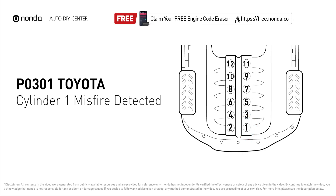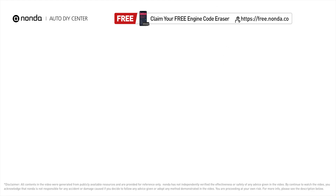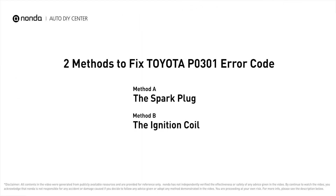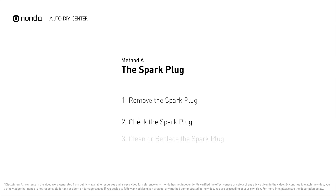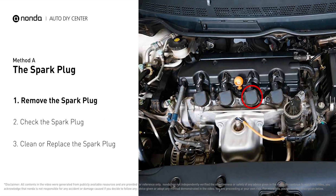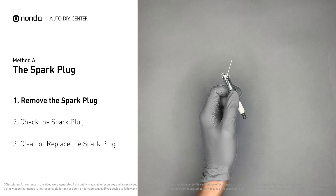Here are two of the most practical solutions to fix Toyota's P0301 error code. Method A: the spark plug. The spark plugs are located at the engine end of the wires, under the plug covers that attach them. First, carefully remove the spark plug.